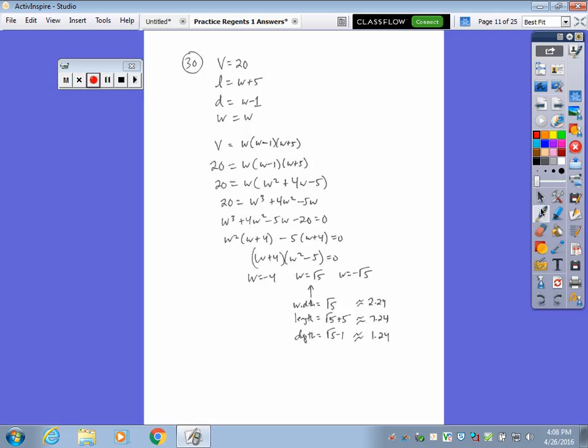So I multiplied these two together, and then I multiplied in the W, put 20 on the other side. Because of the four pieces here, I did factor by grouping. And I got three different answers, because it's a cubic function. W equals negative 4, W equals radical 5, and W equals negative radical 5. The only one that will work is positive radical 5. So that gives you the width, the length, and the depth. And it says, give your answers both in radical form and to the nearest hundredth.